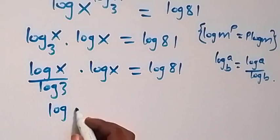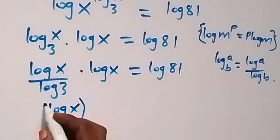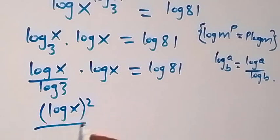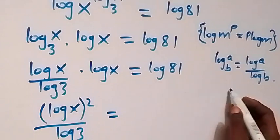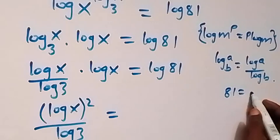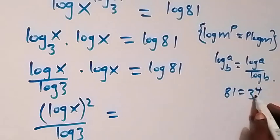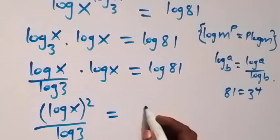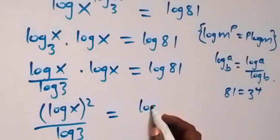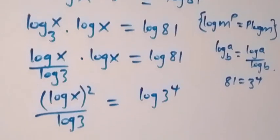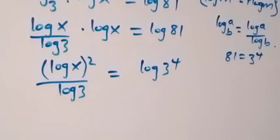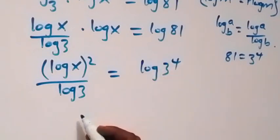This gives us (log x)^2 over log 3 equals log 81. Now we can change 81 as 3 raised to the power 4 — since 3 multiplied by itself 4 times gives 81. So the right side becomes log 3^4. Applying the power rule again, the 4 comes to the front, giving us 4 log 3.